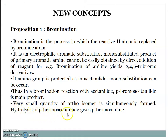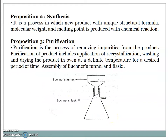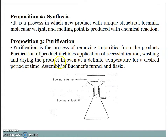Hydrolysis of para-bromoacetanilide gives para-bromoaniline. Proposition 2: Synthesis. It is a process in which a new product with unique structural formula, molecular weight, and melting point is produced by a chemical reaction. Proposition 3: Purification. Purification is the process of removing impurities from the product. Purification of the product includes application of recrystallization, washing, and drying the product in an oven at a definite temperature for a desired period of time.